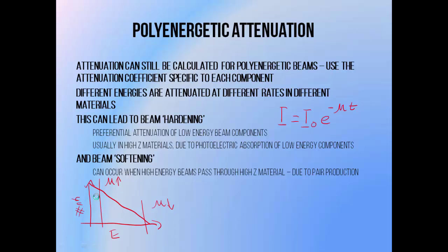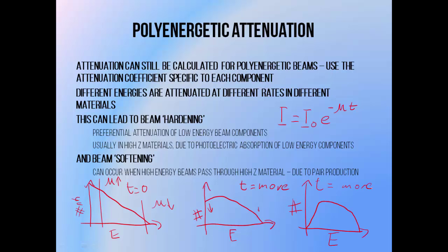Consider a spectrum that still has a lot of low-energy components — before passing through any material. Once the beam has passed through a little bit of material, the low-energy part of the spectrum decreases relative to the high-energy part, because the lower-energy part has a higher linear attenuation coefficient. The lower-energy part of the spectrum is being filtered out. As the beam passes through more material, the lower-energy components are attenuated more and more. This process is known as beam hardening — the preferential attenuation of low-energy beam components.